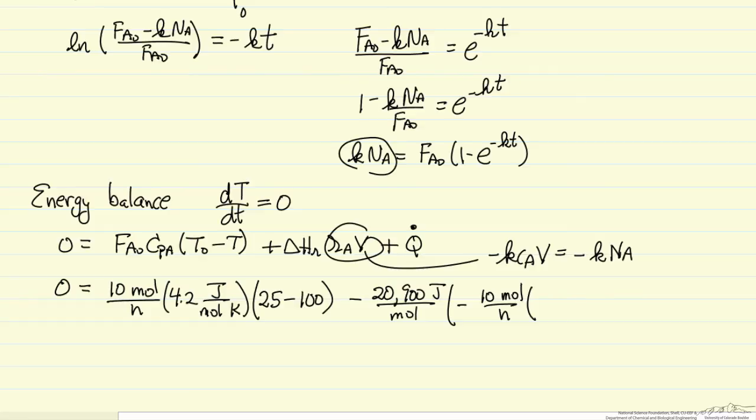Times 1 minus E to the minus 1.8 times time, and then the last term, Q dot, which is what we're solving for.